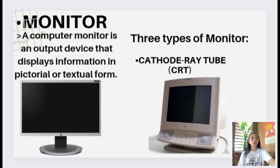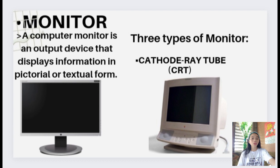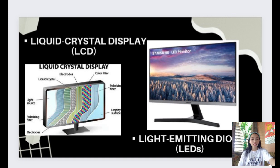Next is the monitor. A computer monitor is an output device that displays information in pictorial or textual form. A discrete monitor comprises a visual display, support electronics, power supply, housing, electrical connectors, and external user controls. There are three types of monitor: the CRT (cathode ray tube), which is a vacuum tube containing one or more electron guns that emit electron beams manipulated to display images on a phosphorescent screen, and the LCD (liquid crystal display).